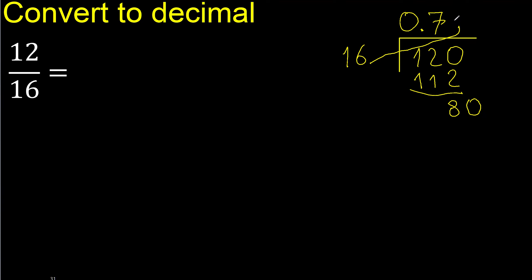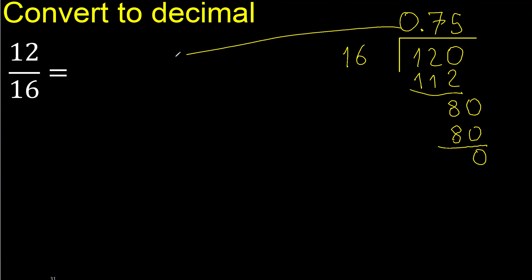Multiply by which number? Multiply by 6 is greater; multiply by 5 is exactly 80. Subtract — 0. Finish.